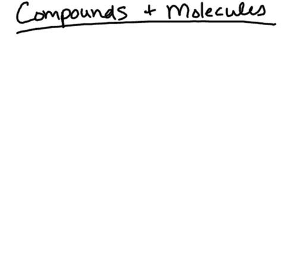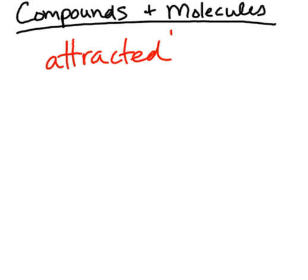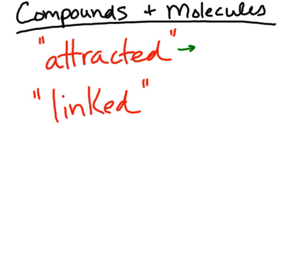When atoms that are classified as elements are combined in some way, there are different degrees of combination. Atoms can be attracted to each other, or they can be actually linked together with a particular type of bond. Atoms that are attracted to each other usually have ionic bonds, and when they are linked together they have covalent bonds.